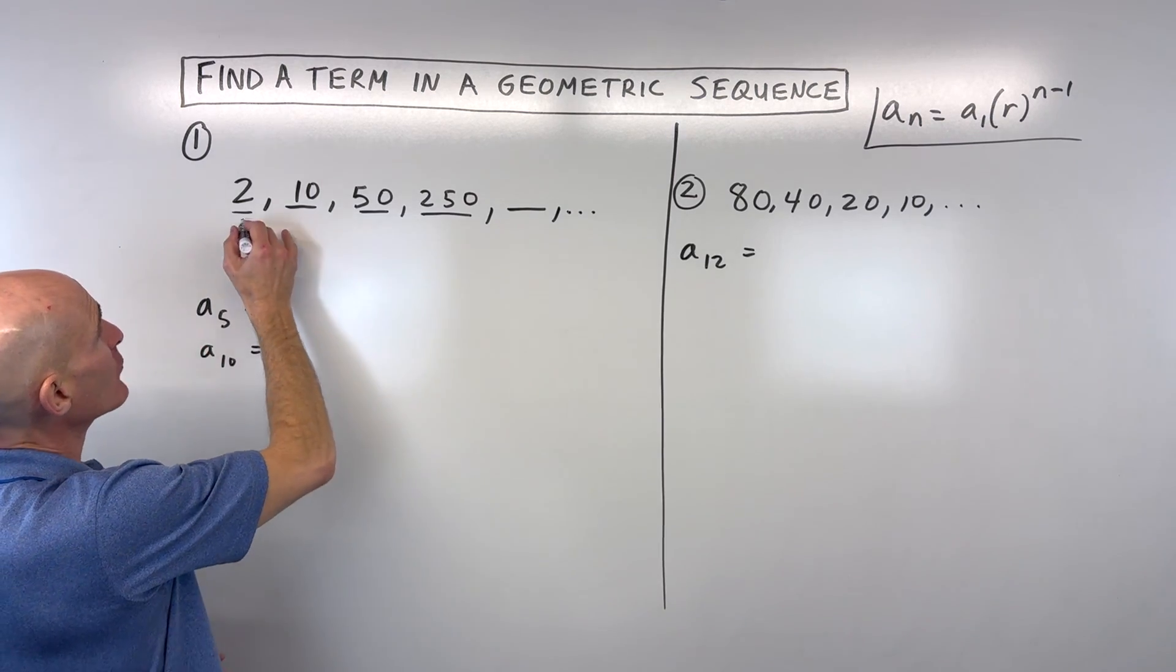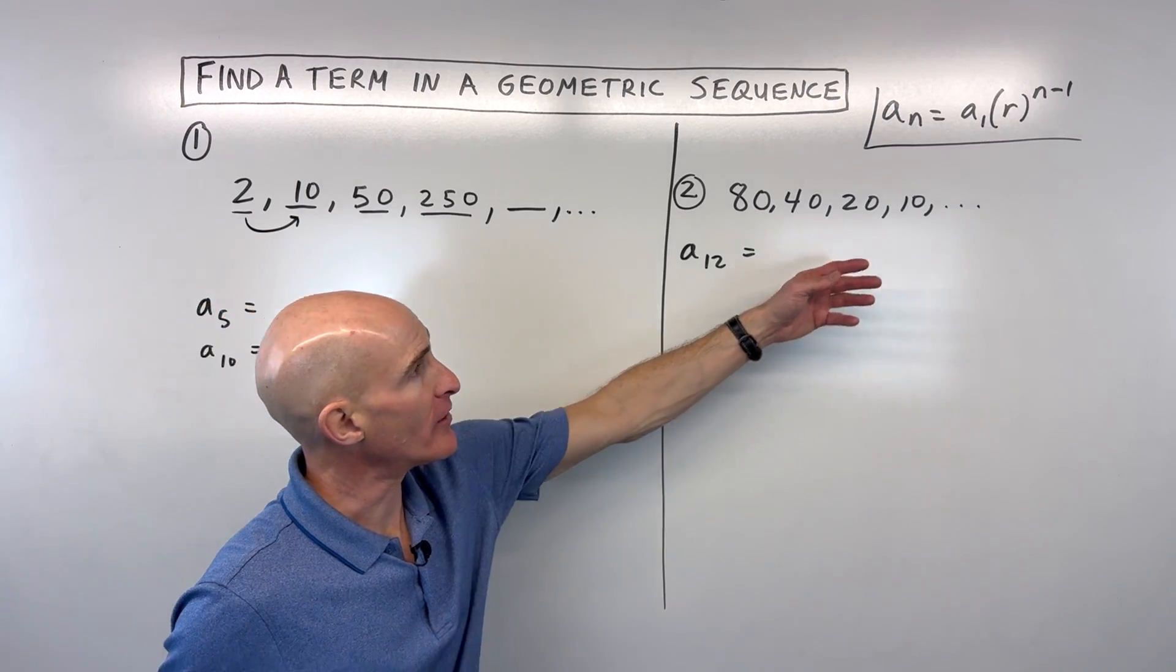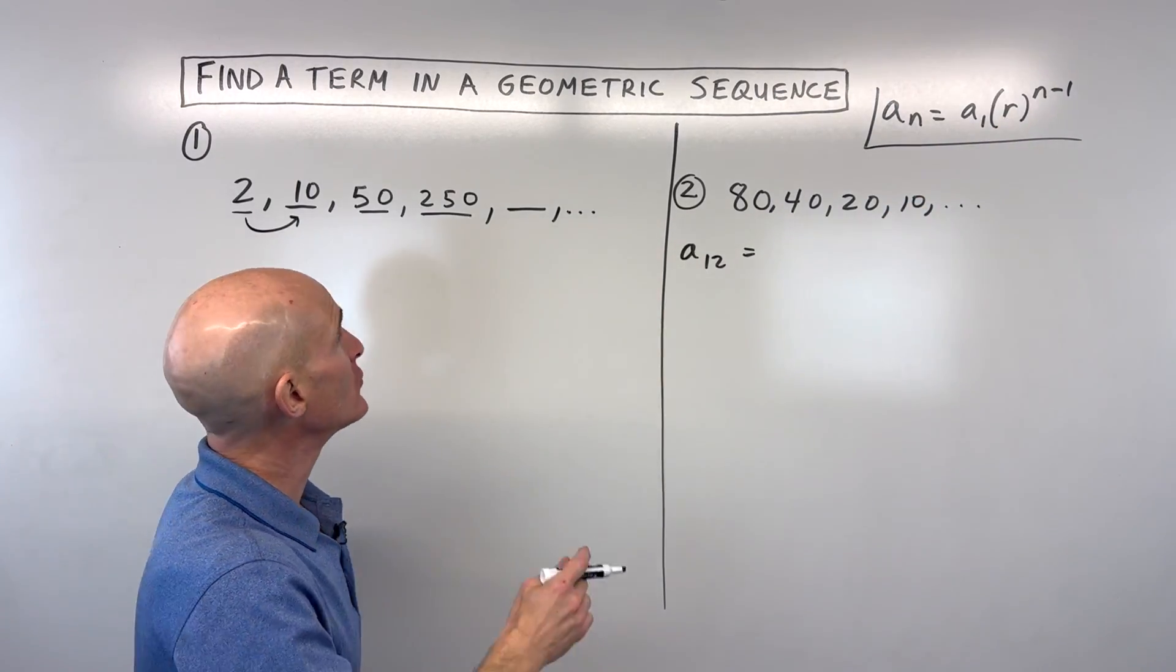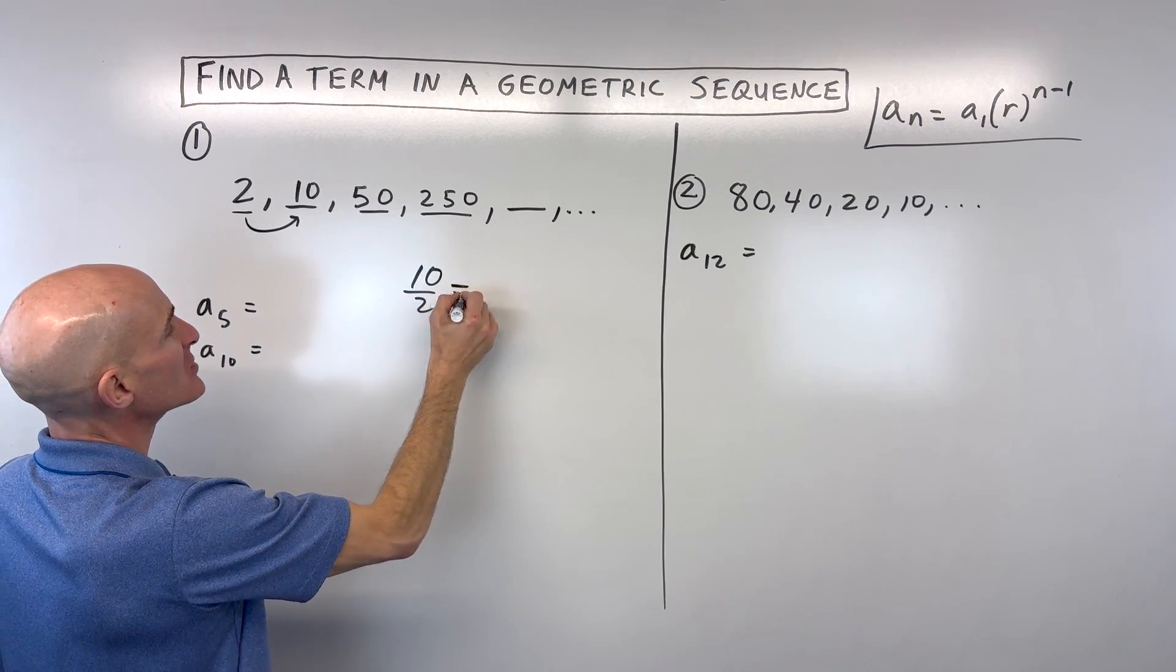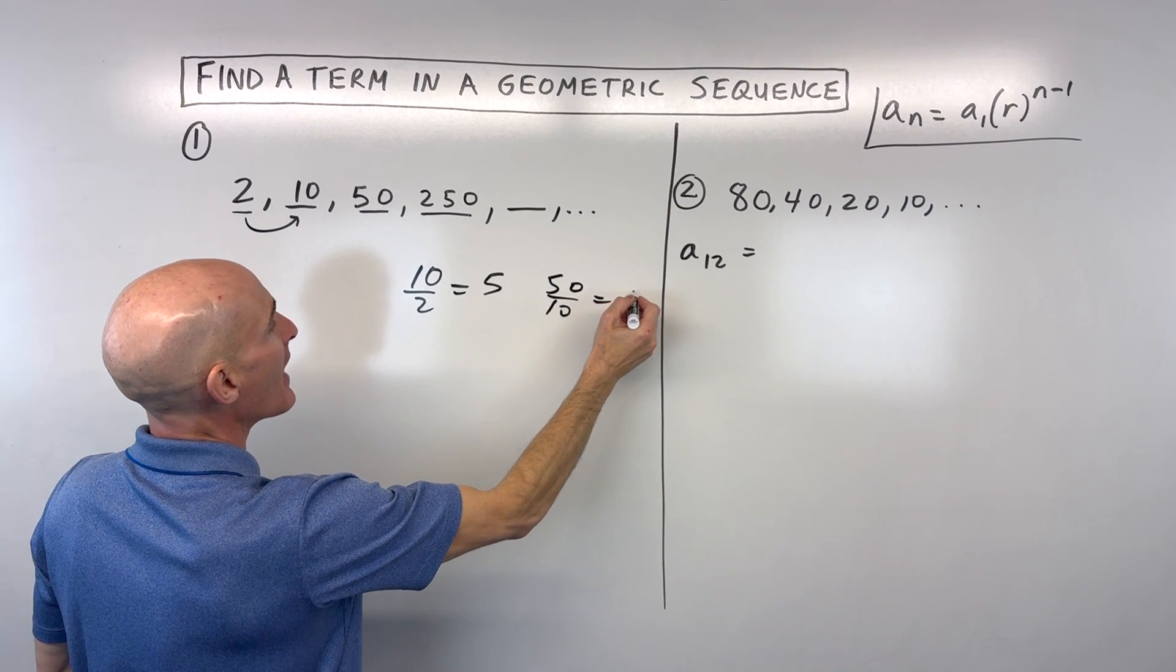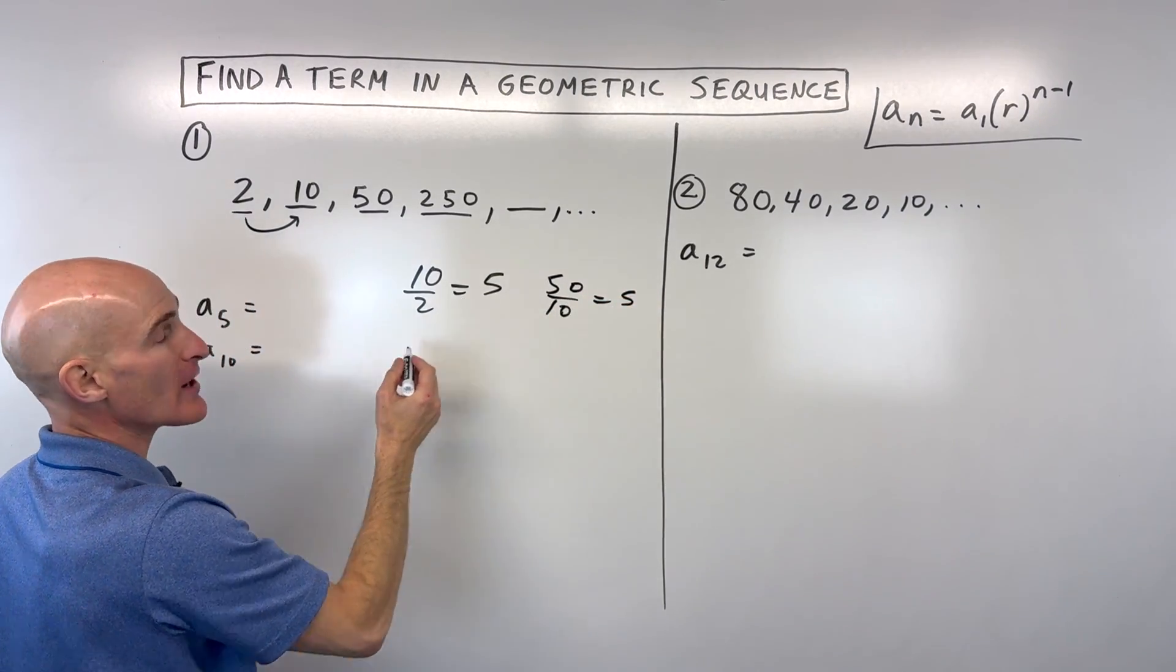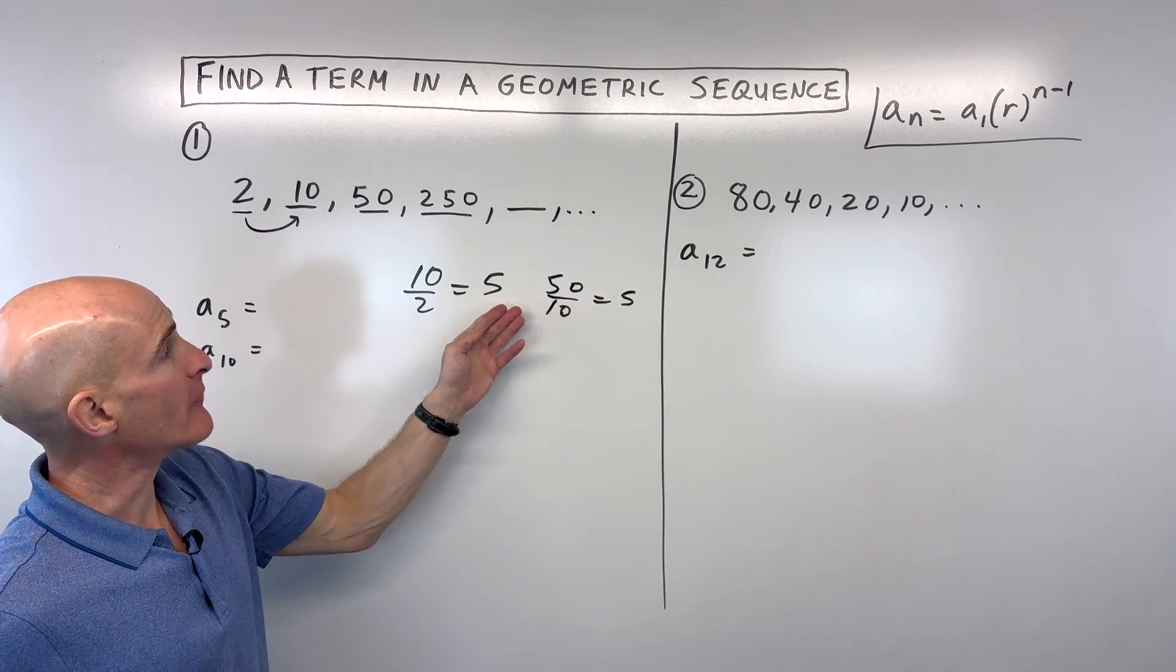And that 5 that we're multiplying by is what's called our common ratio. The reason they call it the ratio or the r value is because if you take the number divided by the one before it, like 10 divided by 2, you get 5. Or if you take 50 divided by the one before it, you get 5. And you can see you're always getting that same ratio of those two terms. And that's called our r value or our ratio.